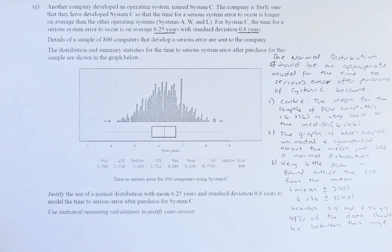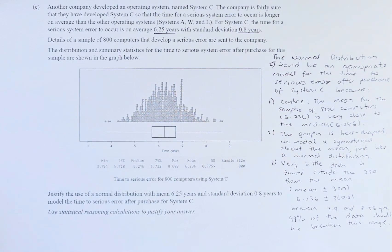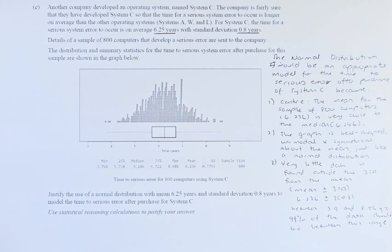Good day! In this video, we are going to try to solve question 3C, the final question of the 2021 NCA Level 3 probability distribution method. So without further ado, let's read the question. It's a long question.